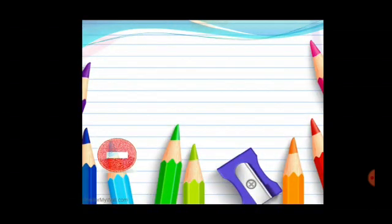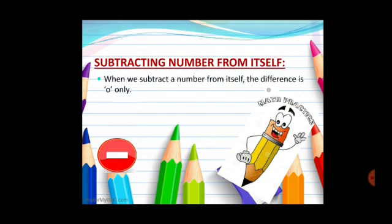Another property is subtracting the number from itself. If we subtract a number from itself, the difference is 0 only. Whenever minuend and subtrahend both are same, answer is 0.